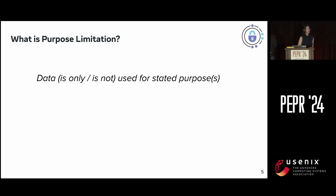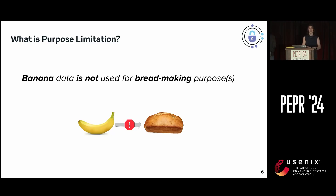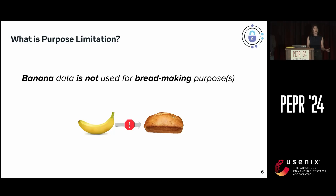Purpose limitation is this idea that data is or is not used for some set of purposes. For example, banana data is not used for bread-making purposes — so no banana bread here. This is the example we'll be using throughout the presentation to make things more concrete, because some of these topics are more complicated to talk about without an example.